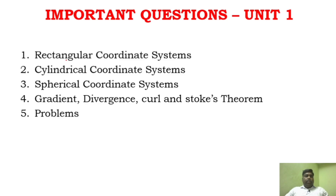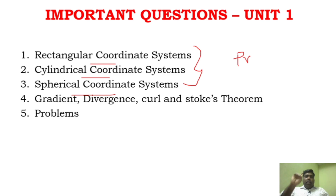As I said, coordinate systems — rectangular, cylindrical, and spherical — are very very important. There are derivations as well as problems. These are very important areas. Go through problems continuously. In Unit 1, there are problems at the end of the unit. The gradient, divergence theorem, and Stokes' theorem are key. Problems are very very important in Unit 1.